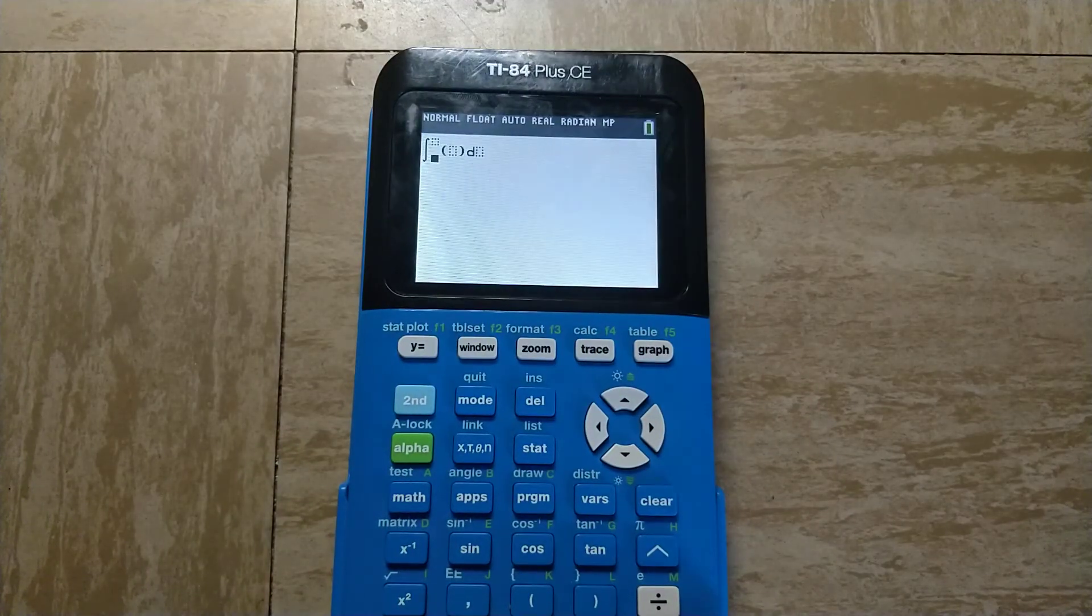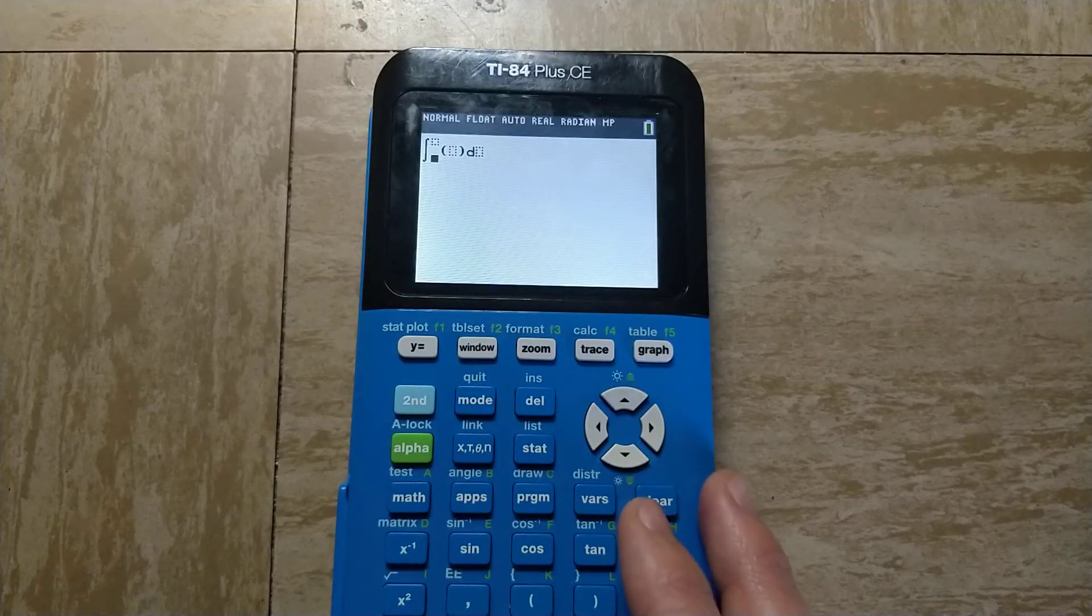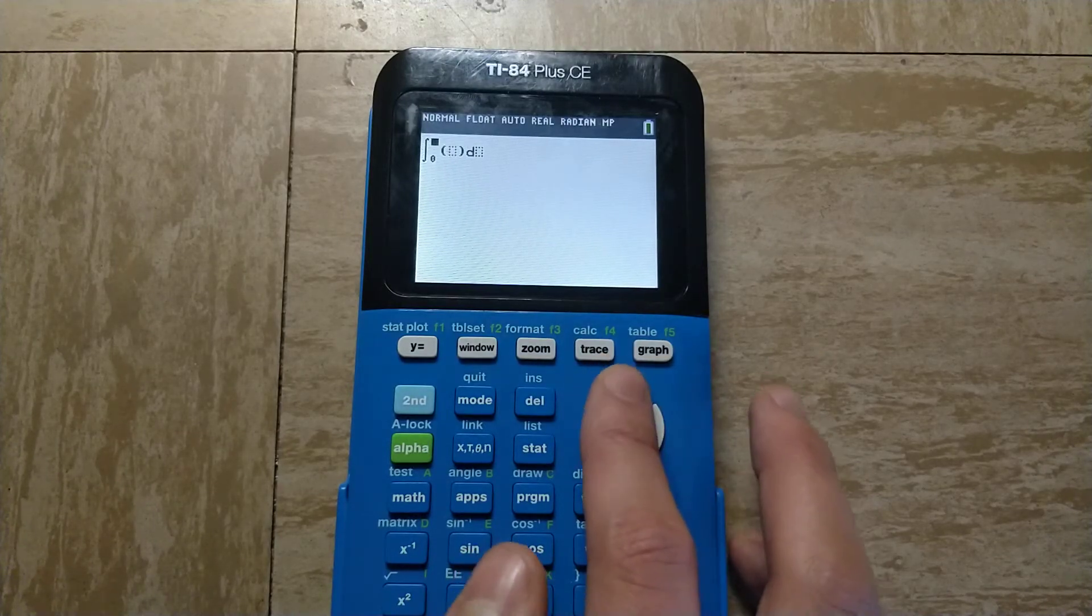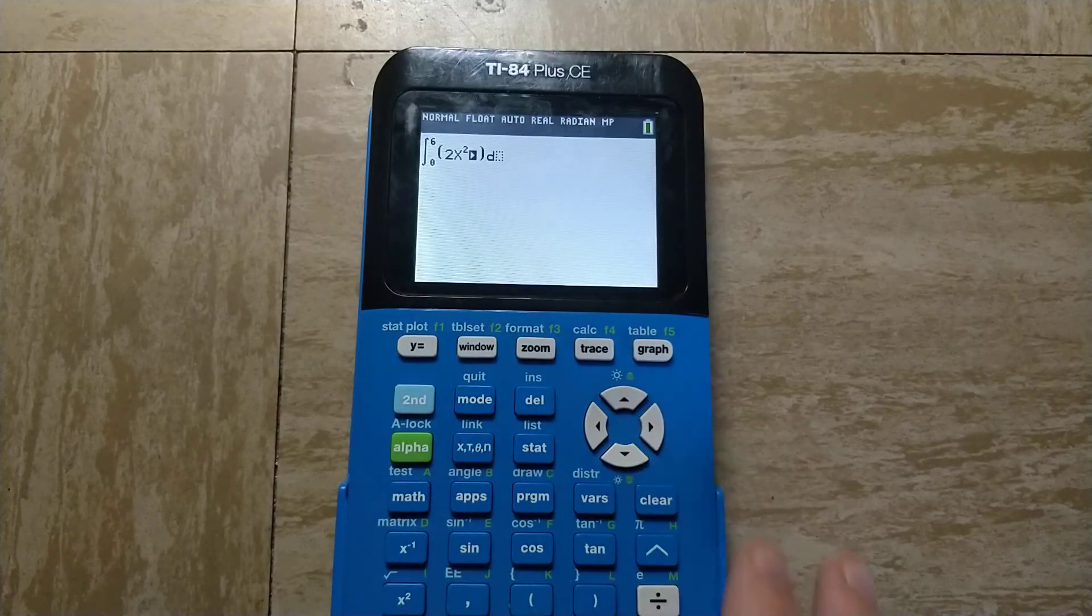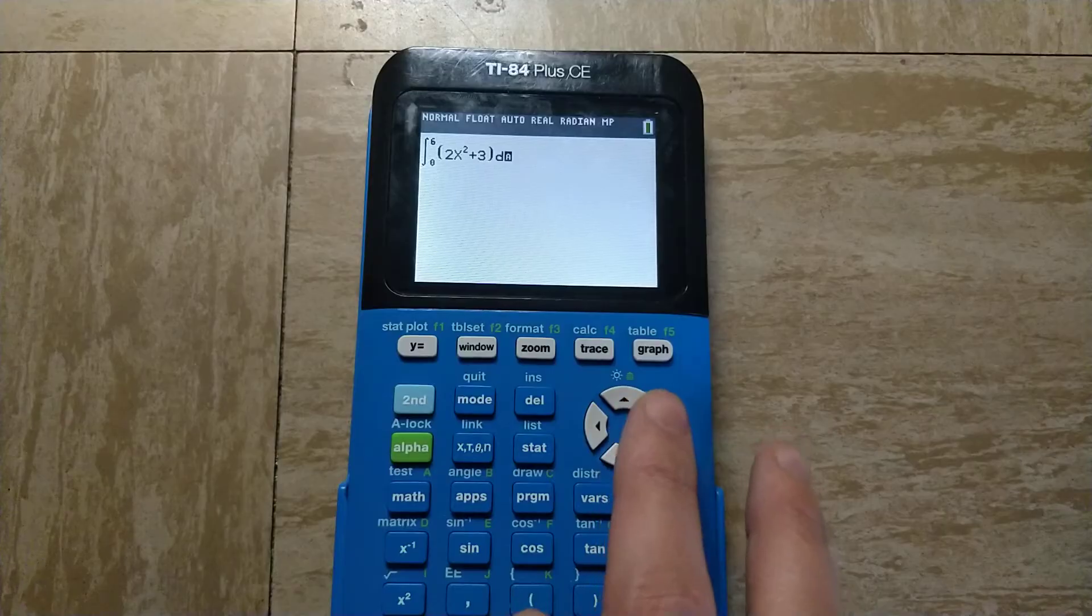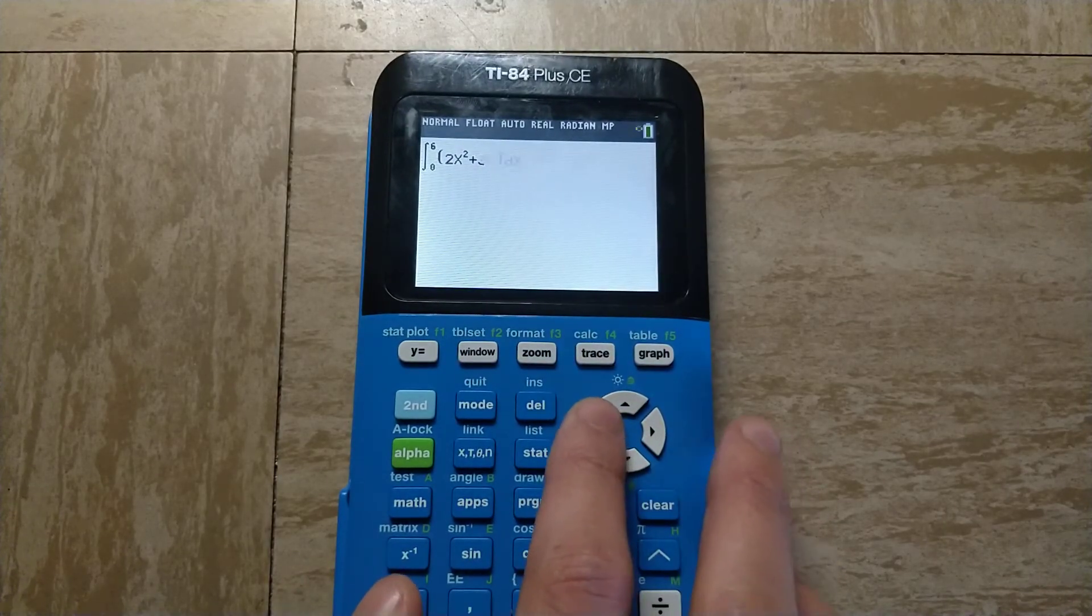So then just press enter, and you'll see this template here. So I want to calculate the definite integral from x equals 0 to x equals 6 of 2x squared plus 3 with respect to x. And you can just use the arrow keys here to navigate between the options.